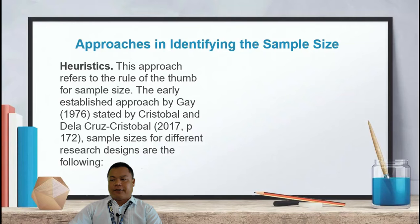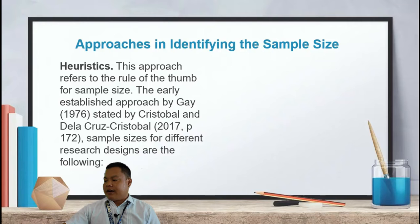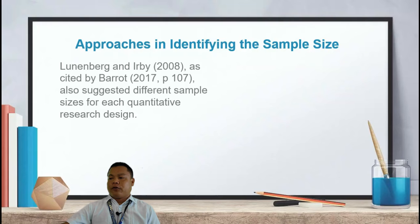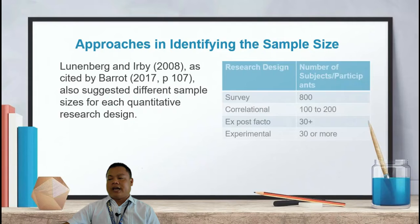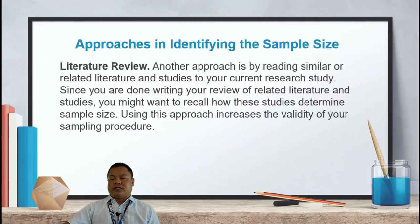There are different approaches to consider when identifying the sample size. The first is heuristics — the rule of thumb for sample size. According to Christopher and De la Cruz (2017, p. 172), sample sizes for different research designs are as follows: descriptive research requires 10% to 20% of the population; comparative research requires 15 subjects per group. Learnbirds and Erby, as cited by Barot (2017, p. 107), suggested: correlational — 100 to 200; survey — 800; experimental research design — 30 or more.